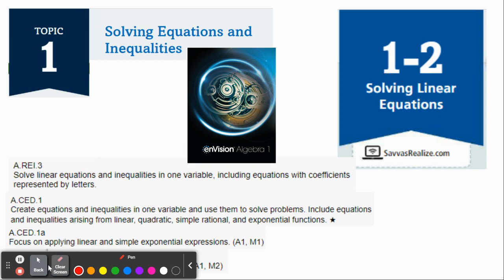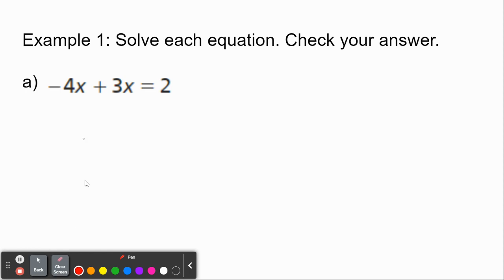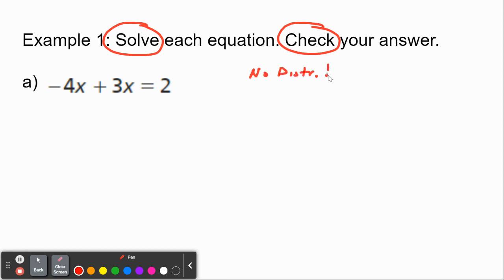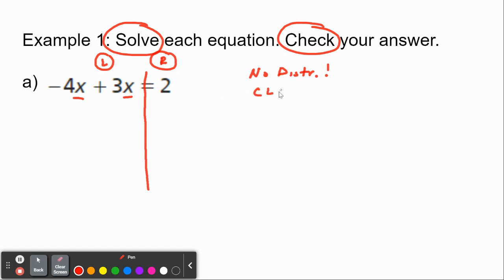Let's get right to it. Our first example says solve each equation, and then we're going to check our answer. If I look at this, the first thing I'm looking for is parentheses, and I see no parentheses — so we're not going to distribute. Next, I'm going to draw a line down the equal sign, creating my left side and my right side. I see a negative 4x and a 3x on the left side — the fact that I said x twice should signal that these might be like terms.